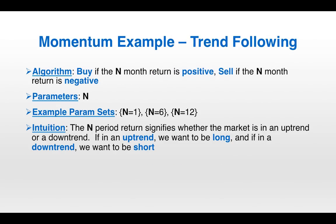A very simple example of momentum is simple trend-following. The algorithm is buying if the N-month return is positive and selling if the N-month return is negative — it has just one parameter, N. The intuition is that the N-period return signifies whether the market is in an uptrend or a downtrend. If it's in an uptrend, we want to be long; if it's a downtrend, we want to be short. The assumption is that the direction of the trend will continue. This is the same assumption as with the moving average cross we looked at last time, and indeed that strategy also falls under the momentum umbrella.